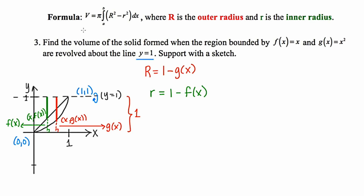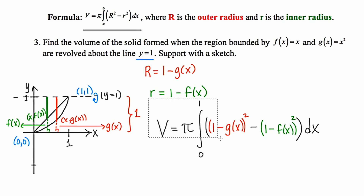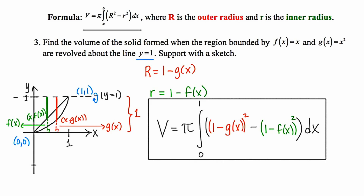Now using the volume formula written at the top of the slide, volume equals pi times the definite integral. The representative radii are perpendicular to the x-axis, making this a dx problem. Our low x is 0 and high x is 1. The outer radius is 1 minus g(x), squared, minus the inner radius squared: 1 minus f(x), quantity squared. This is the setup to find the volume of this region revolved about the line y equals 1.